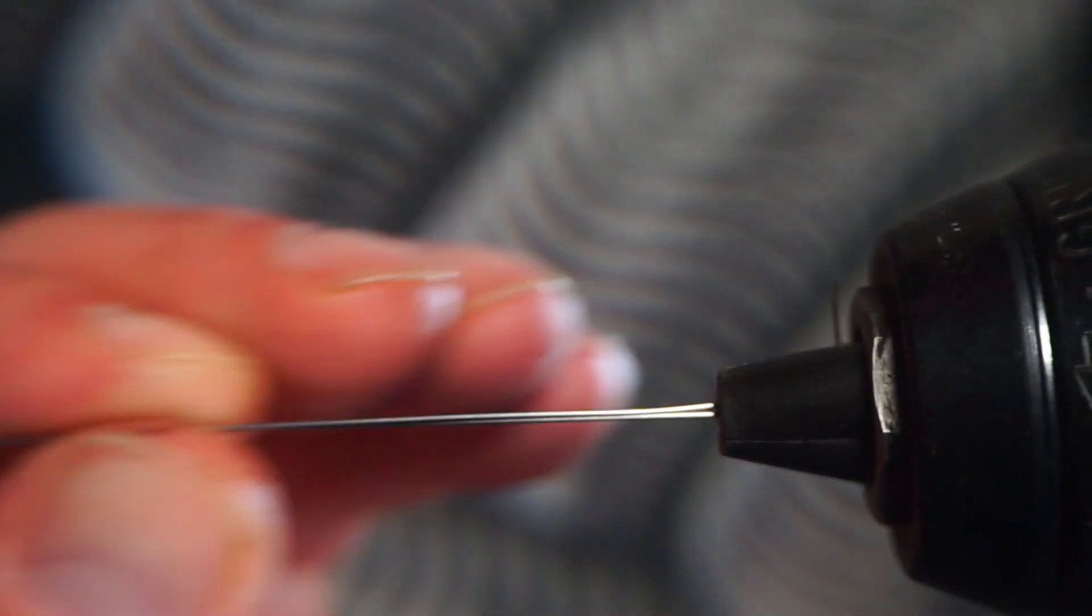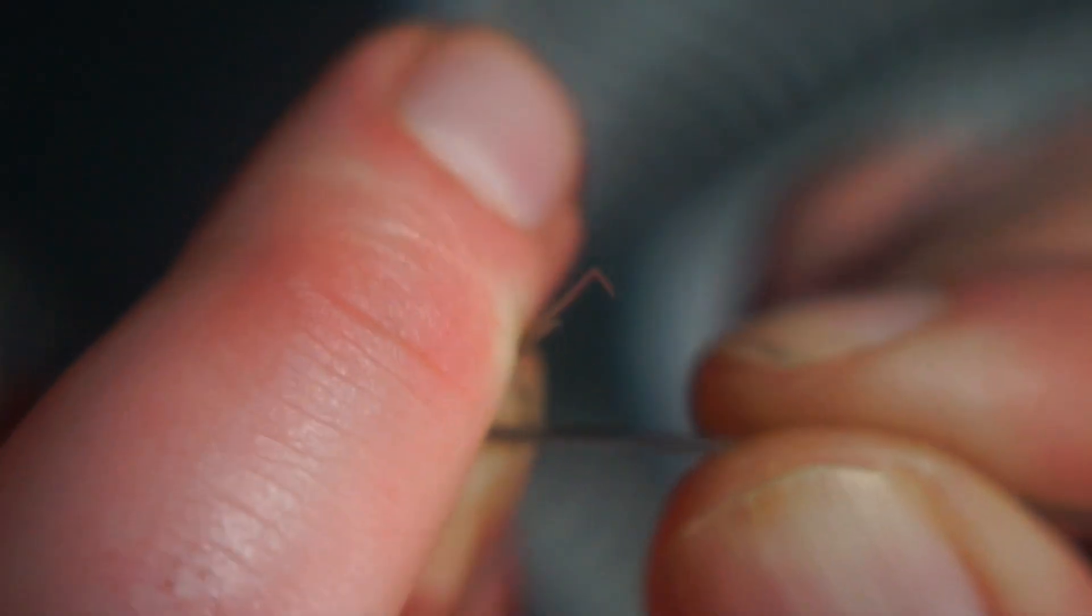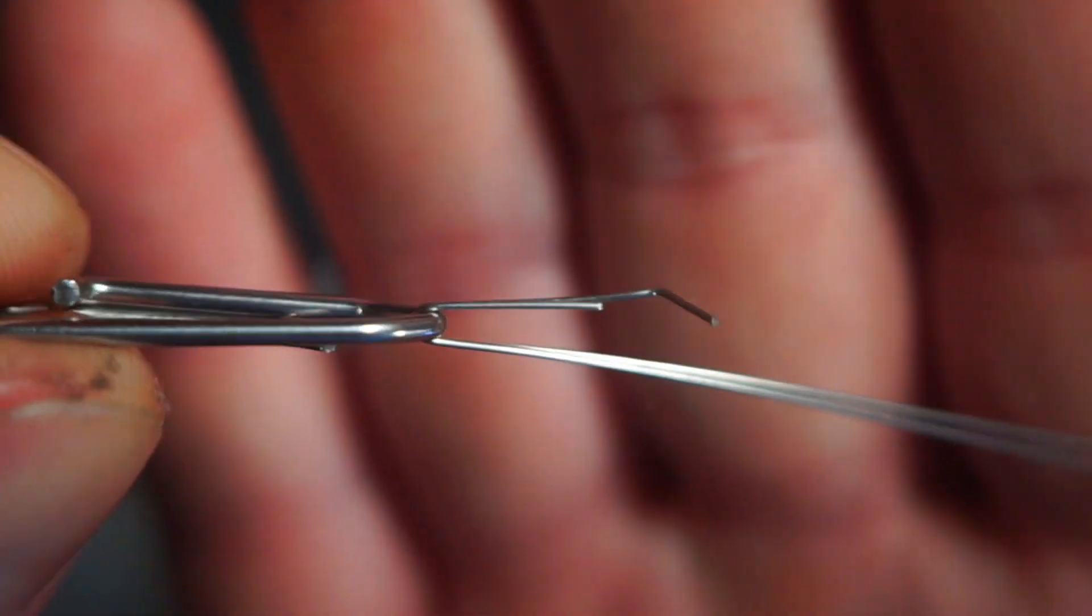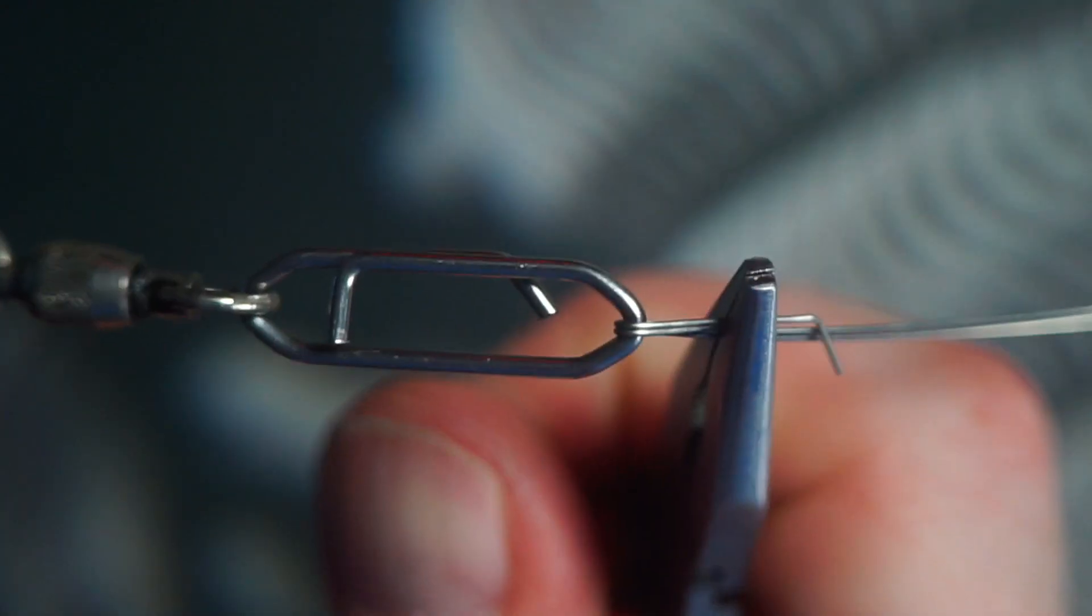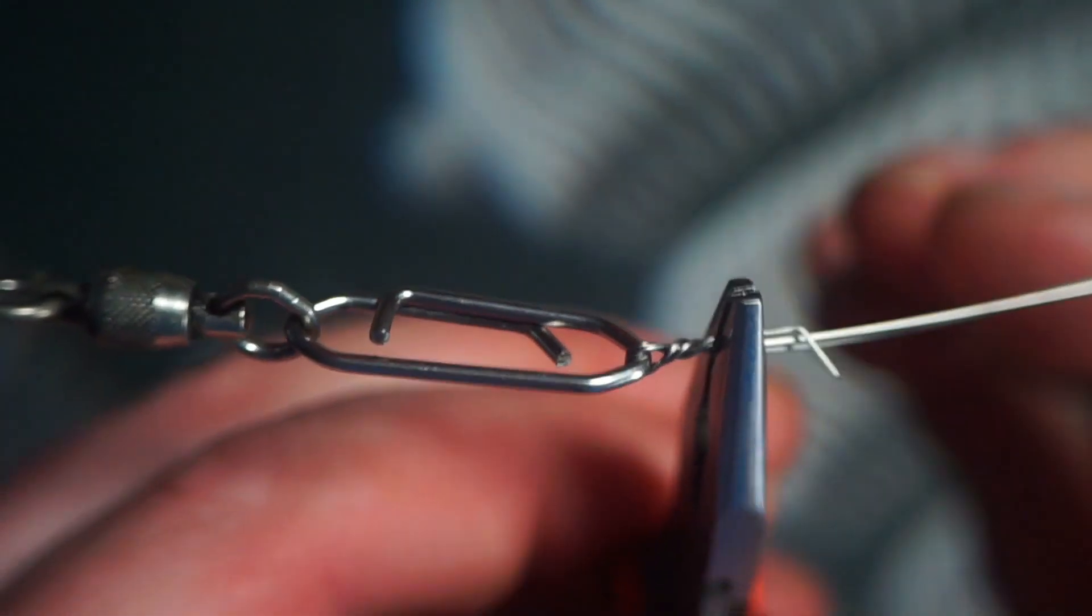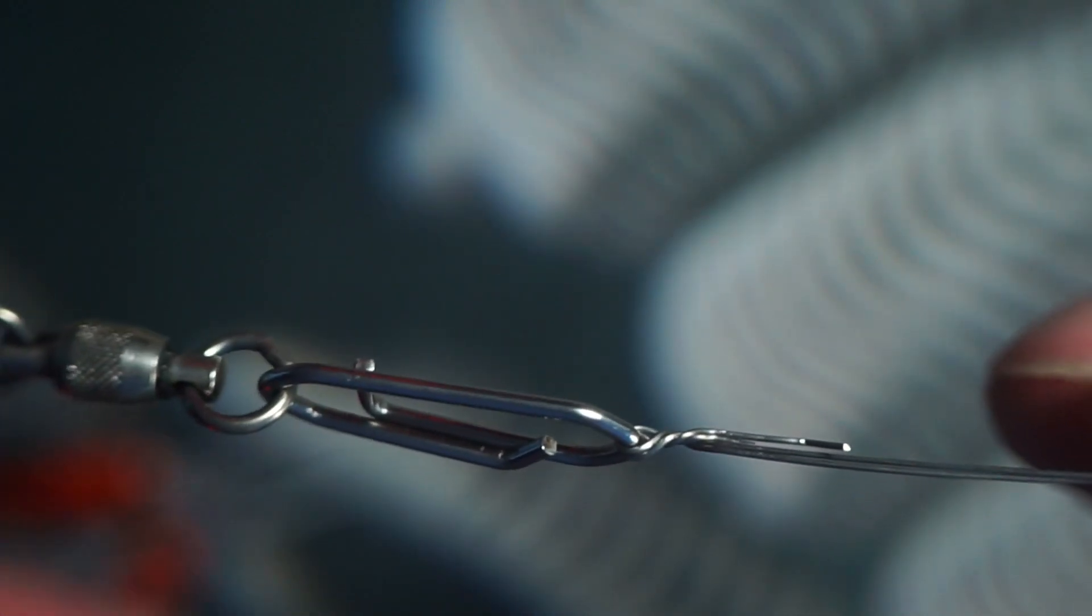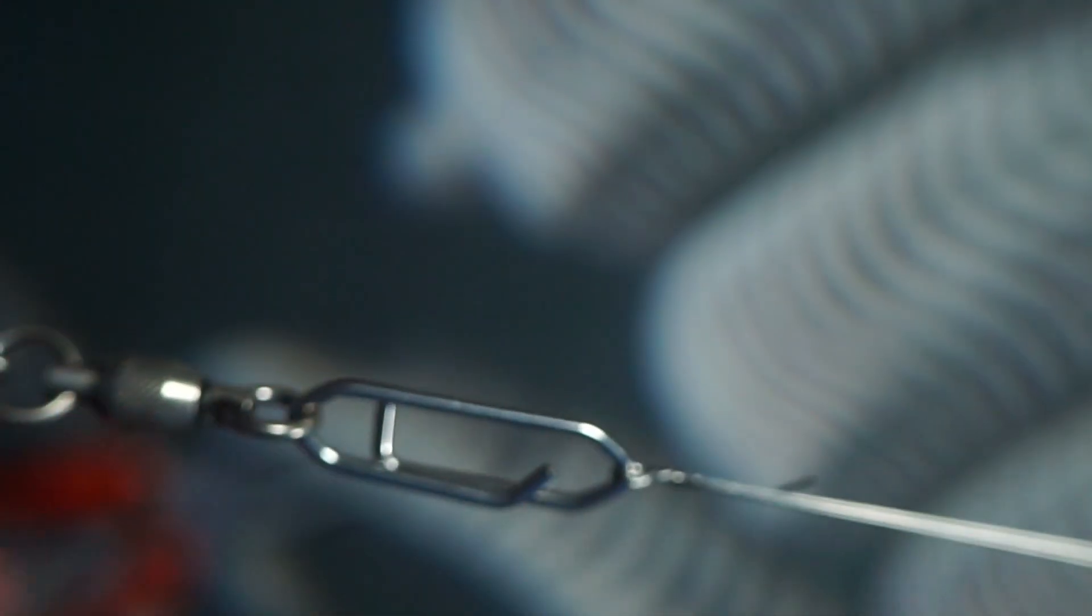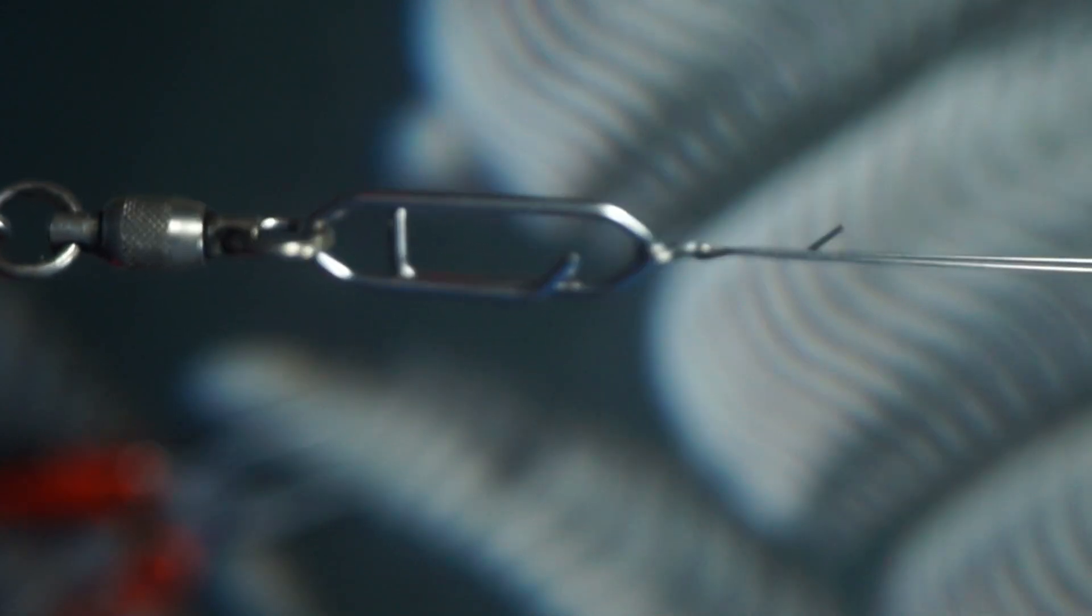The next thing is to get the other end of the two cores secured to your swivels. Grab your two cores, the end of your cores, and push them through the last fishing swivel you have and make a U shape. Then you can grab your pliers and give it a twist. A couple of twists is enough. That is going to secure the opposite end. Then you can pull your drill straight, and now we're ready to secure the wrap wire.